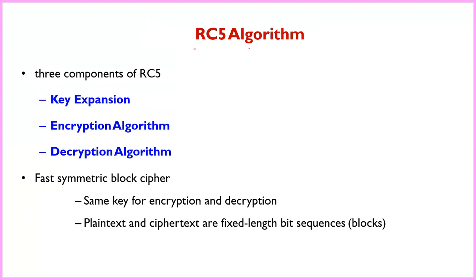Now we enter into the algorithm. The three components of the RC5 algorithm are: first, key expansion; second, encryption; and third, decryption. RC5 is one of the fast symmetric block ciphers since the same key is used for both encryption and decryption.